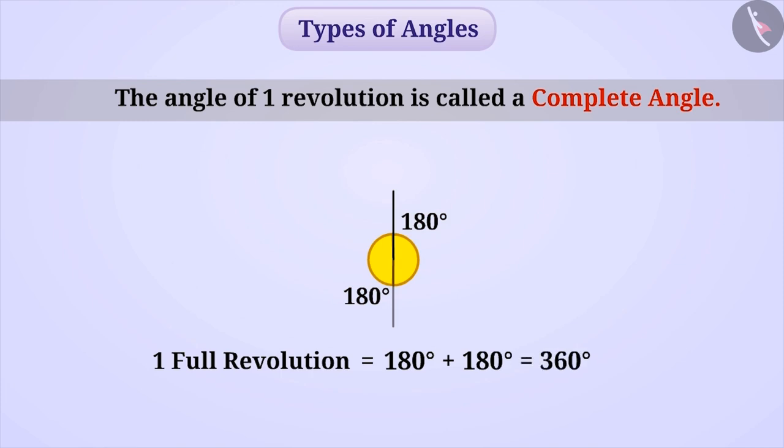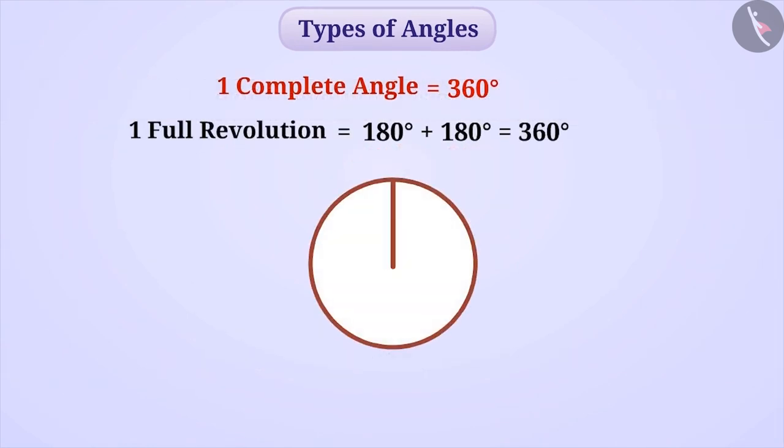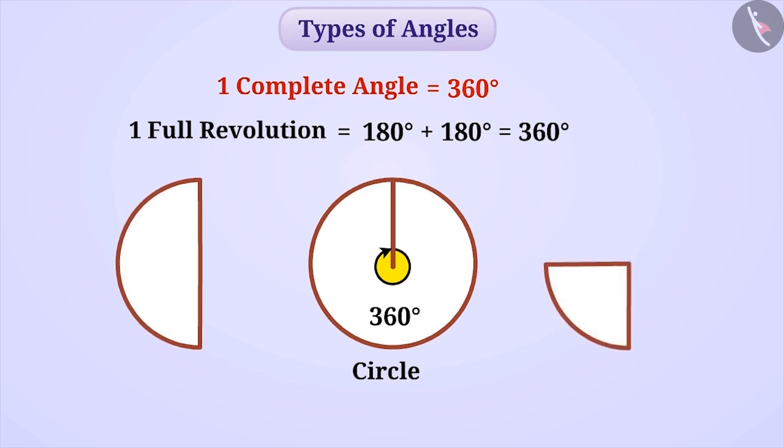Therefore, we can say that the measurement of one complete angle is 360 degrees. We also say that a circle represents a 360 degrees angle. If a circle represents 360 degree angle, then identify the angle represented by a half circle or half of half circle.